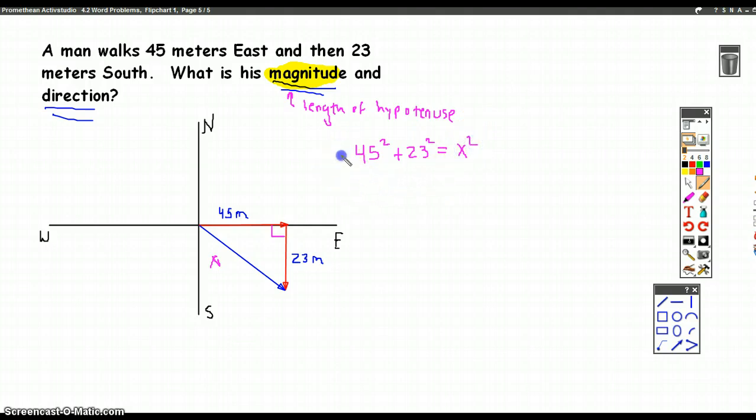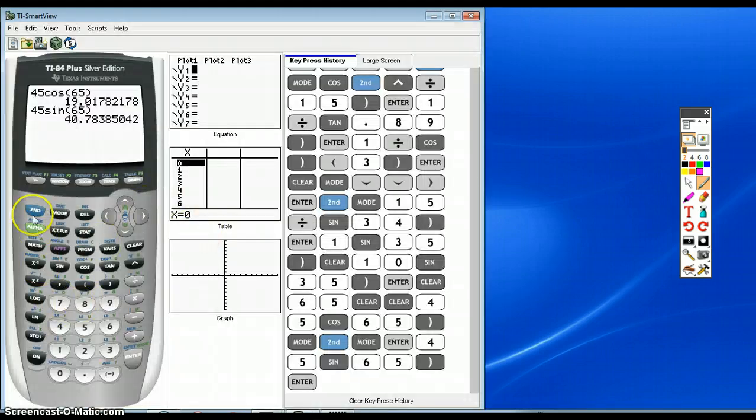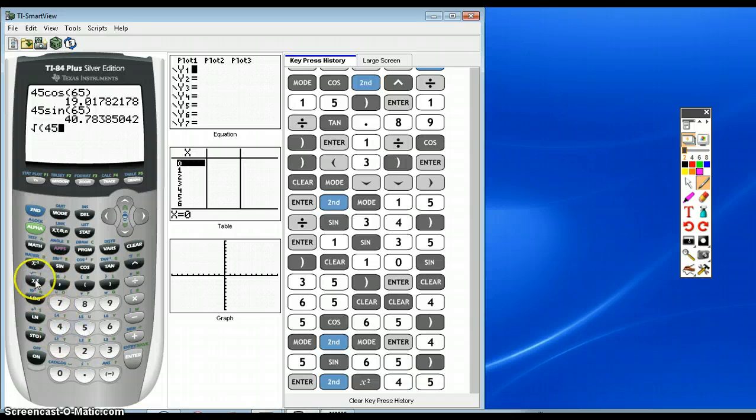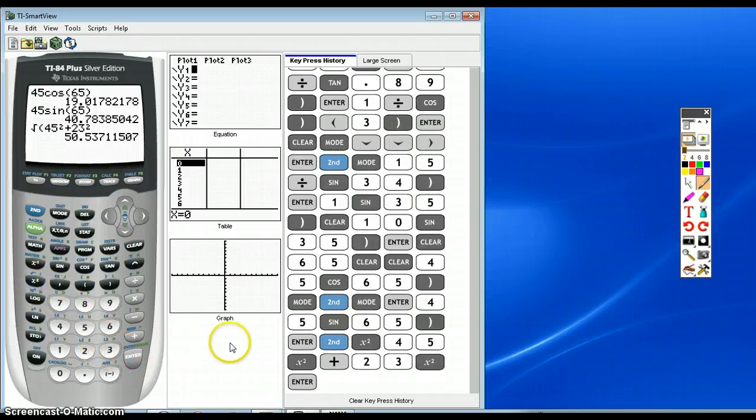And if we just square root both sides, we'll get our answer, so we can put this in the calculator. Square root of 45 squared plus 23 squared. 50.537.